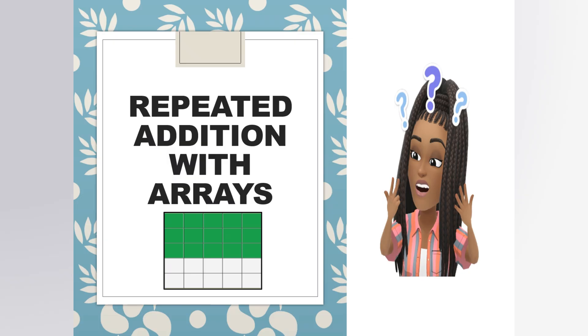The number in each row is the number that will be added repeatedly. The number of rows tells you how many times to add the number.